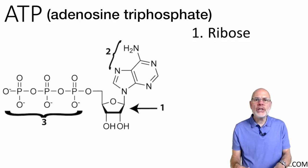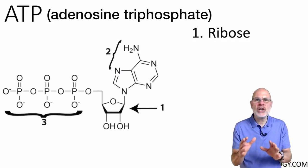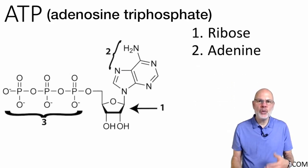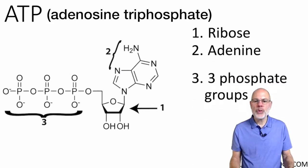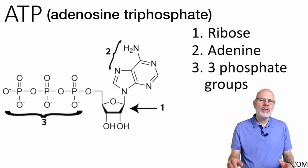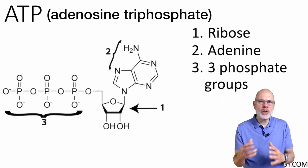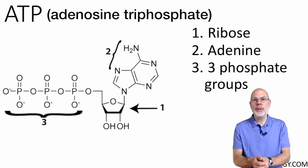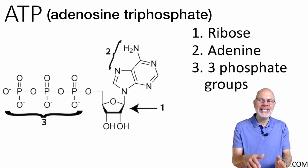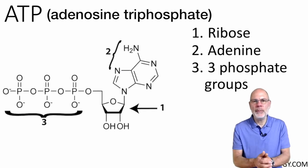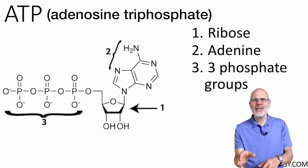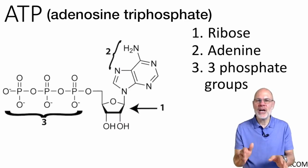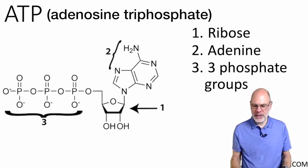In terms of structure, what you can see here in ATP is there's a ribose sugar, a five-carbon sugar, that's attached to a nitrogenous base that's attached to three phosphate groups. This kind of structure is incredibly important because ATP is essentially a nucleotide. Nucleotides are the building blocks of nucleic acids, DNA and RNA. This one would be a building block of RNA because it has the ribose sugar.